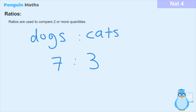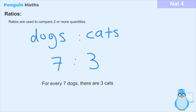Similar to fractions, when we have a ratio it's always put in its simplest form. So in other words, there isn't a common number that can go into both seven and three. That means that this ratio between the dogs and the cats is already in its simplest form. Just to put it in written form, this ratio means that for every seven dogs there are three cats.